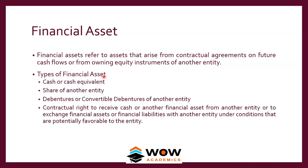Types of financial assets include cash, cash equivalents (such as very short-term instruments like treasury bills), shares of another company, debentures or convertible debentures of another company, and contractual rights to receive cash or another financial asset from another entity. It can also include an exchange of shares between companies, provided the company makes a profit from such a transaction.